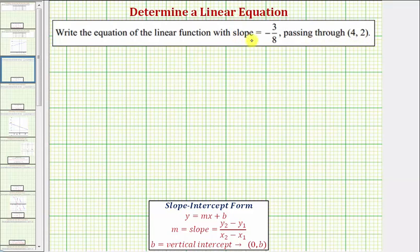We'll find our equation in slope-intercept form, which is the form y equals mx plus b, where m equals the slope of the line, and b equals the vertical intercept, which would be the ordered pair zero comma b.